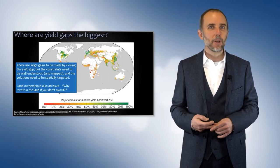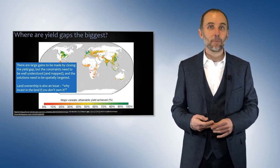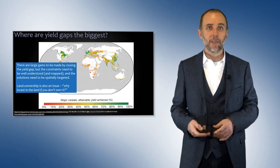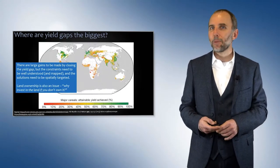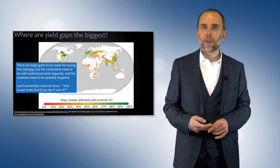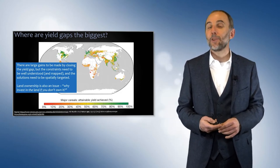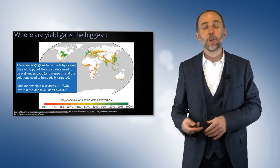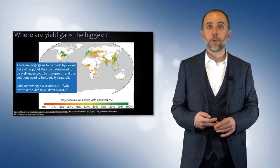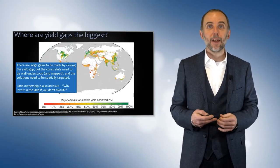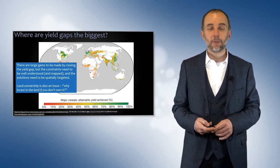This is an interesting question because closing the yield gap means investing — investing in the land, buying better seeds, using new technology. And if you think about land ownership: how many people own the land that they farm? If you don't own the land, why would you invest in it? If you own the land, maybe you have more incentive to invest in it. So there's a really interesting link between the incentives to close the yield gap and whether you own the land or not.